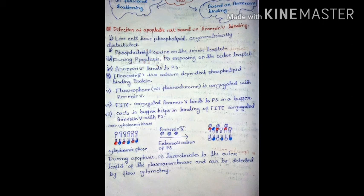Phosphatidylserine is located on the inner leaflet, or cytoplasmic face, of the plasma membrane in normal cells. But when a cell undergoes apoptosis, the phosphatidylserine flips out and moves to the outer surface of the plasma membrane.